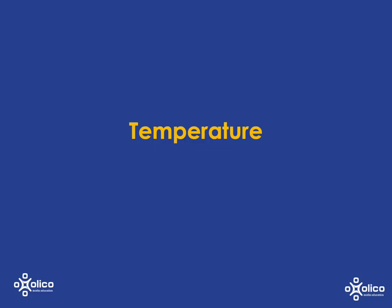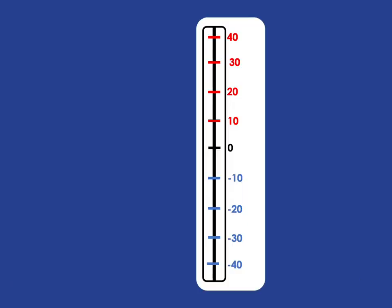We're going to look at temperature as a way to help us understand negative numbers. If we have a thermometer where our temperatures are going from negative 40 degrees Celsius all the way to 40 degrees Celsius, let's remind ourselves of what this means.